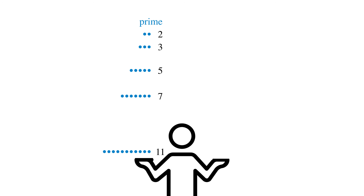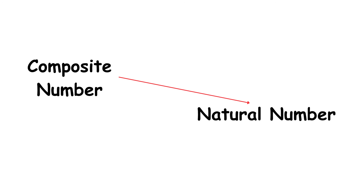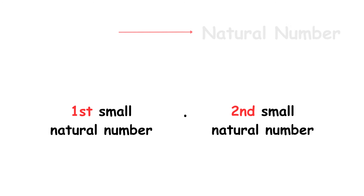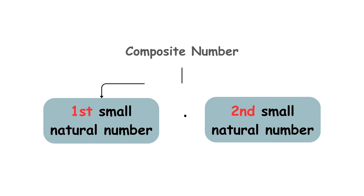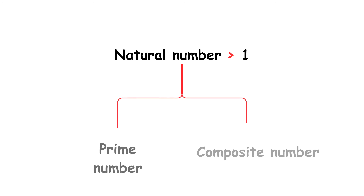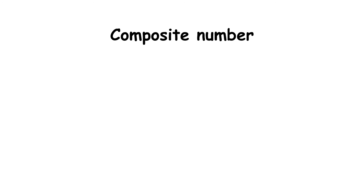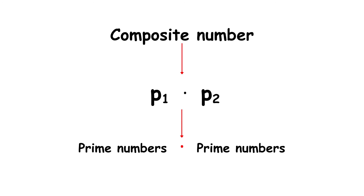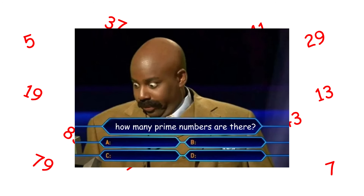Its only factor is 1 itself, so it does not have two factors. In contrast to prime numbers, a composite number is a natural number that you can get by multiplying two smaller natural numbers. Since those natural numbers are factors of the composite number, a composite number always has factors other than 1 and itself. Every natural number greater than 1 is either prime or composite. Now, here's a question: how many prime numbers are there?